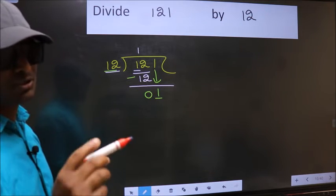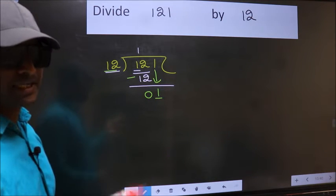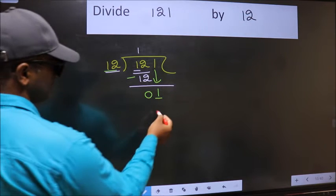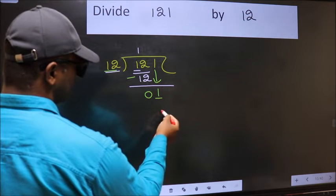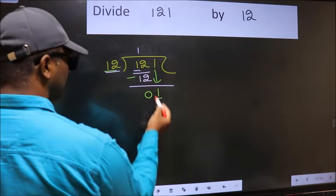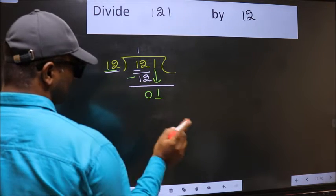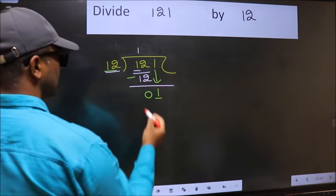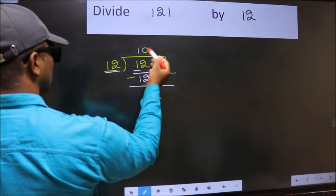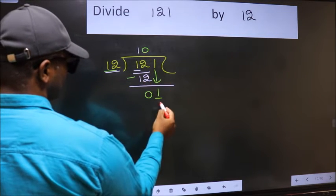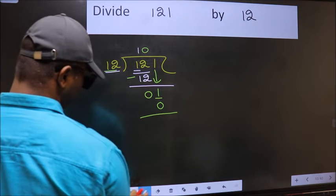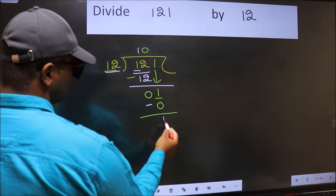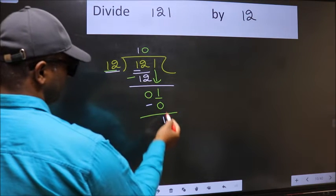Instead, what you should think of doing is which number should we take here. If I take 1, we will get 12, but 12 is larger than 1. So what we should do is we should take 0. So 12 into 0 is 0. Now we should subtract, 1 minus 0 is 1.